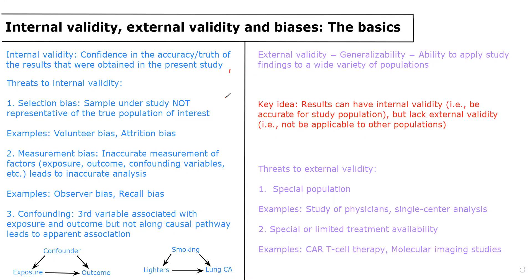The first is selection bias, which is when the sample under study is not representative of the true population of interest. Examples of this include the volunteer bias and attrition bias. Volunteer bias means patients who volunteer for a study may not be representative of the normal population — they may be more interested in health or have higher health literacy. Attrition bias means patients who drop out of a study may differ from the underlying study cohort, such as being more sick or having lower health literacy.